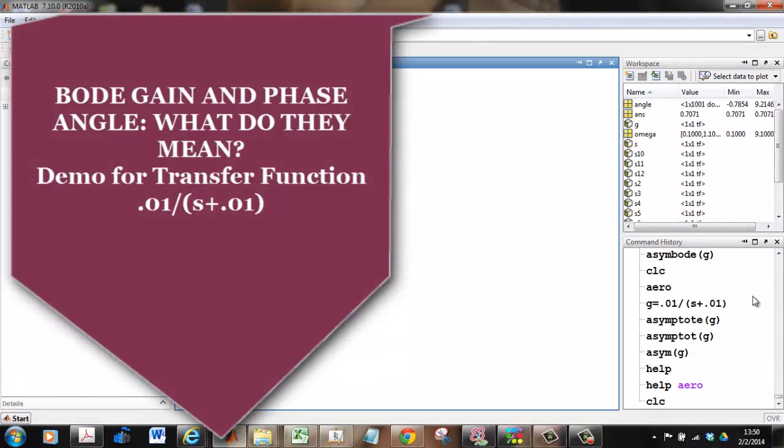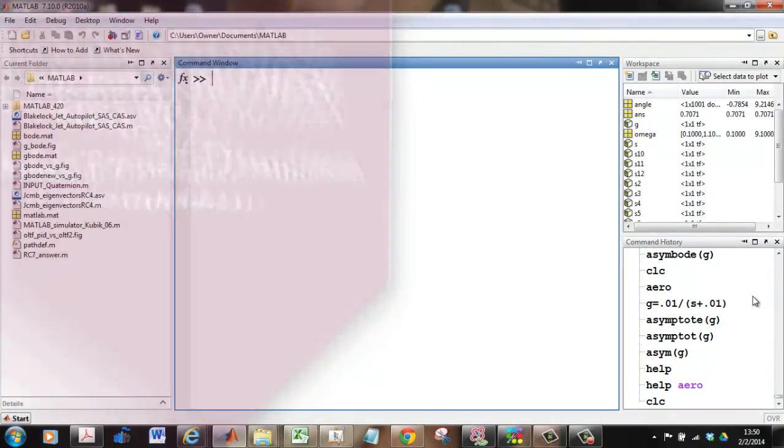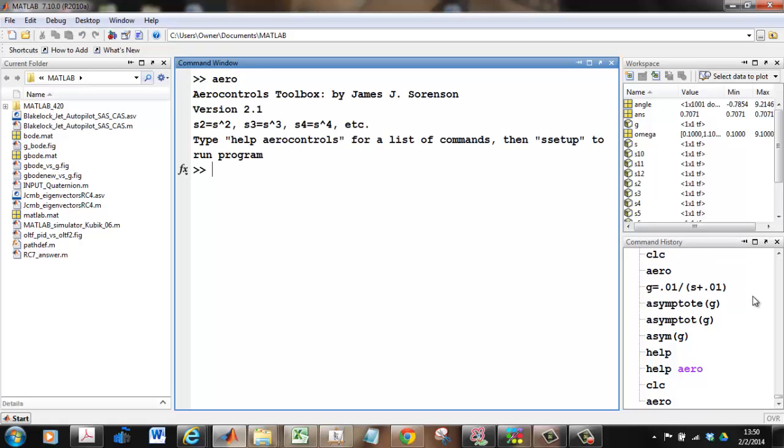Okay, to see what exactly a Bode plot is telling us, let's go to MATLAB and run the arrow controls toolbox and then define the transfer function, a very slow actuator with the time constant of 0.01, like so.